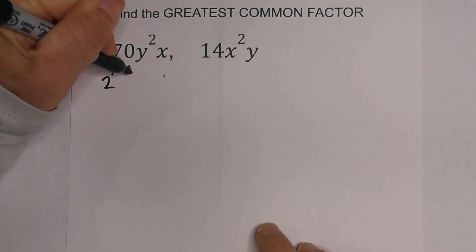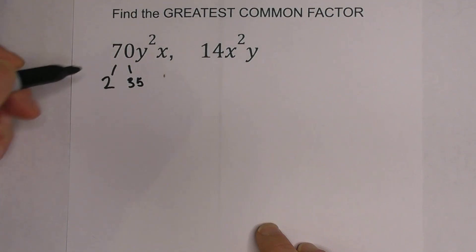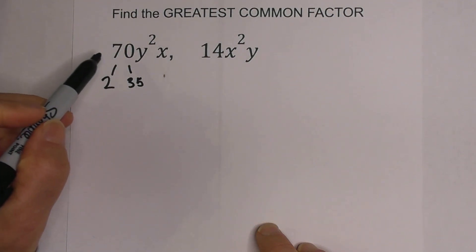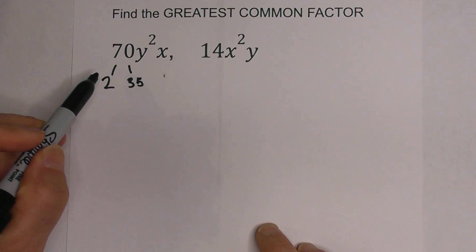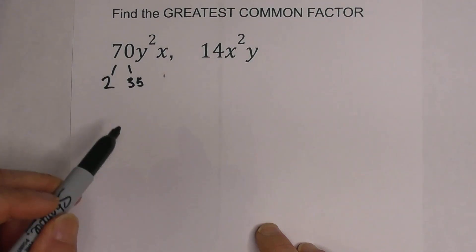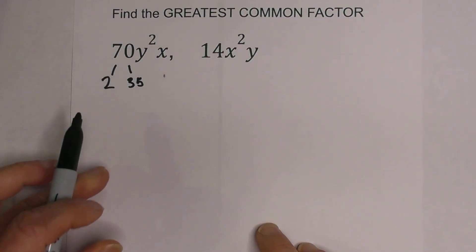So I'm going to begin with 2 times 35. I'm trying to find a pair of numbers that multiply together that equal 70, and 2 times 35 equals 70.